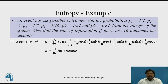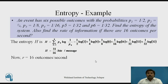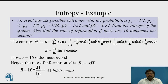Now the next question asks: find the rate of information if there are 16 outcomes per second. The rate of information R equals r times H, where r is the number of messages generated per second. Here r=16 and H=31/16. So R = 16 × (31/16), the 16s cancel, giving R = 31 bits per second.